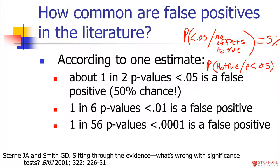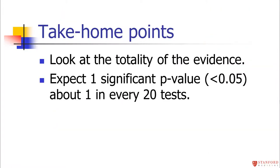For p-values less than 0.01, only about 1 in 6 are a false positive. So modest p-values of 0.01 to 0.05 are much more likely to be false positives, while a really small p-value is much less likely to be one. The take-home point: look at the totality of evidence. If there are many non-significant p-values but just one significant one, don't be too impressed. Expect about one significant p-value in every 20 tests when there are no effects.